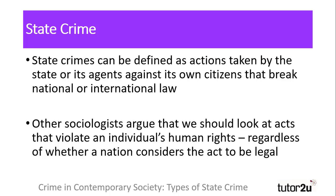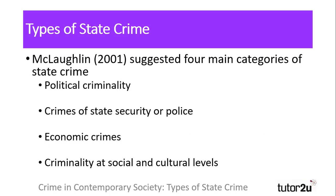Some argue that acting against the wishes of a supranational governmental organisation such as the United Nations also constitutes a state crime, which opens up the actions of many nations to scrutiny in their conduct on the global stage and within their own nations. McLachlan looked to categorise the types of state crime committed using this approach, highlighting four main categories of crimes committed by the state against individuals.